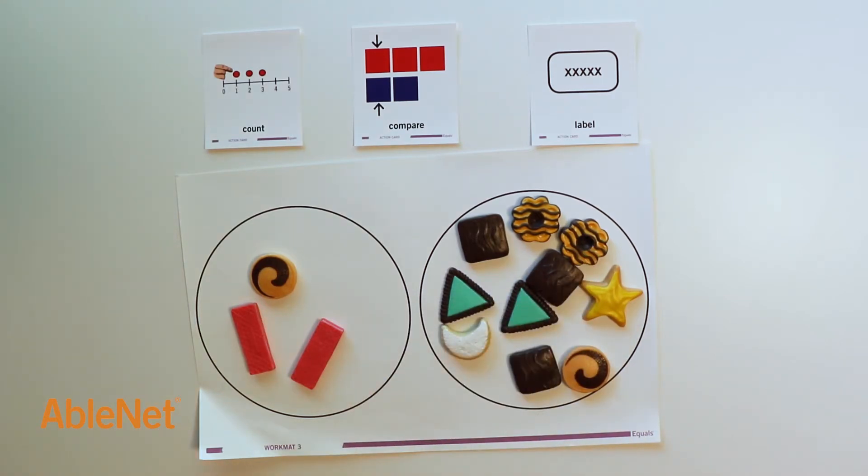Three cookies is less than ten cookies. Now I can label with the symbol. Mrs. Ainsley can count and compare the sets.